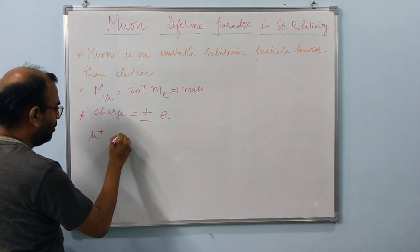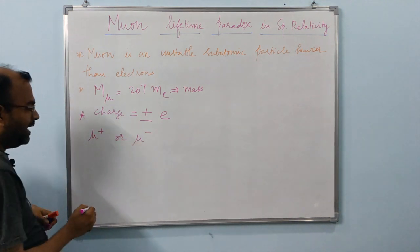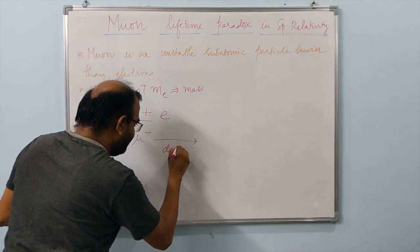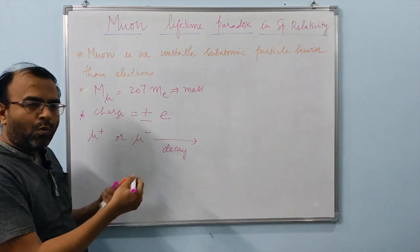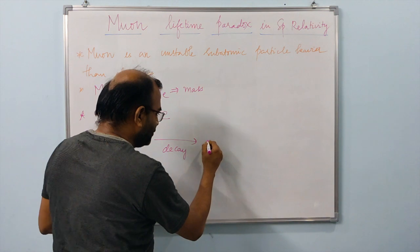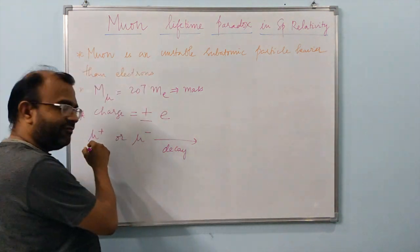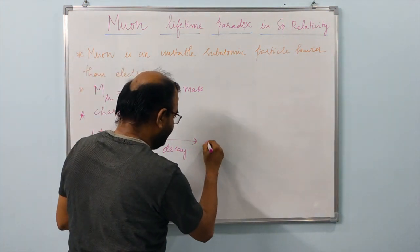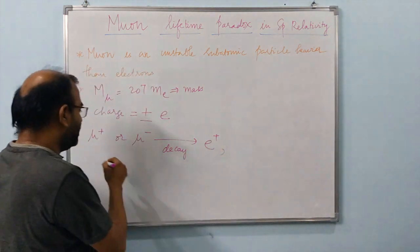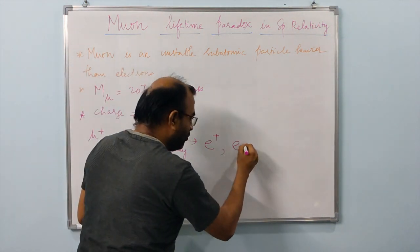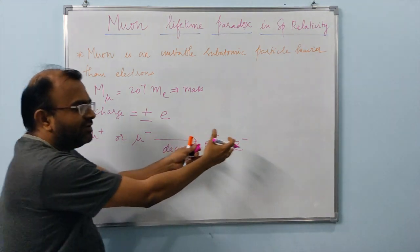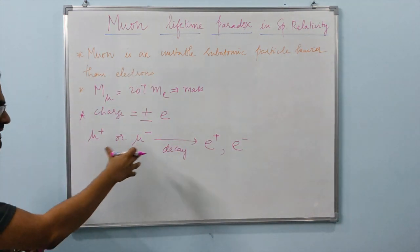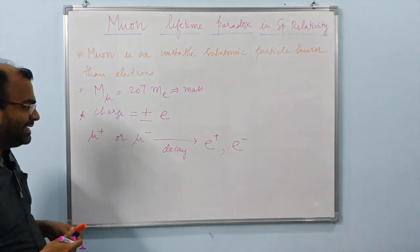The muon can exist as either mu-plus or mu-minus. After decay, one would get either a positron if it were originally mu-plus, or an electron if it were originally mu-minus, along with some neutrinos as well. We are not going into the exact reaction for the decay.